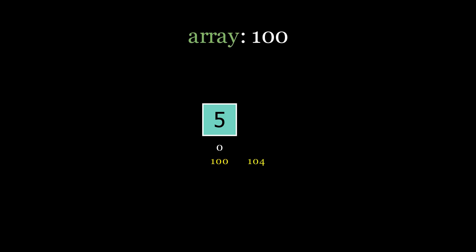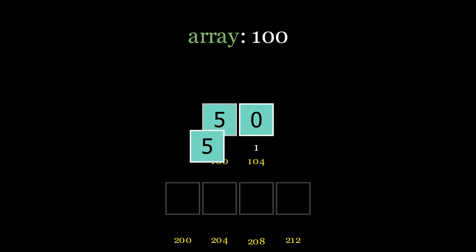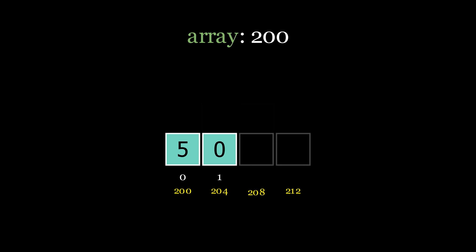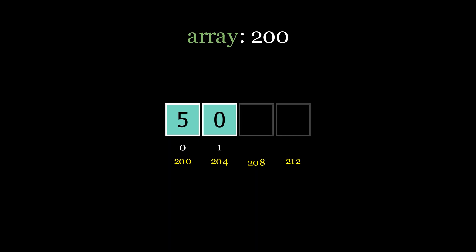Initially, suppose we have an array of size 2 with a base address of 100. Now we need to insert another element. The array becomes full and needs resizing. To handle this, a new array is initialized, usually double the size of the previous one. All the elements from the old array are then copied to the new array. The old array is deleted and the new array becomes the current array. This resizing process may repeat as needed.